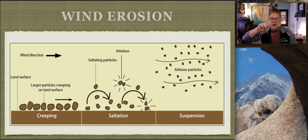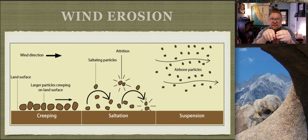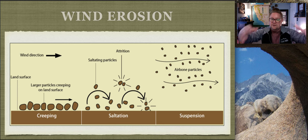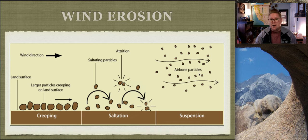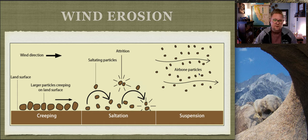Saltation is the process where material becomes airborne, hits the surface, and dislodges other material causing a bouncing effect. About 50% of all material moved by wind is through saltation alone. Creeping and suspension are about 25% each. Suspension is material too small to settle - it just becomes airborne, called particulate matter or PMs, measured in microns.